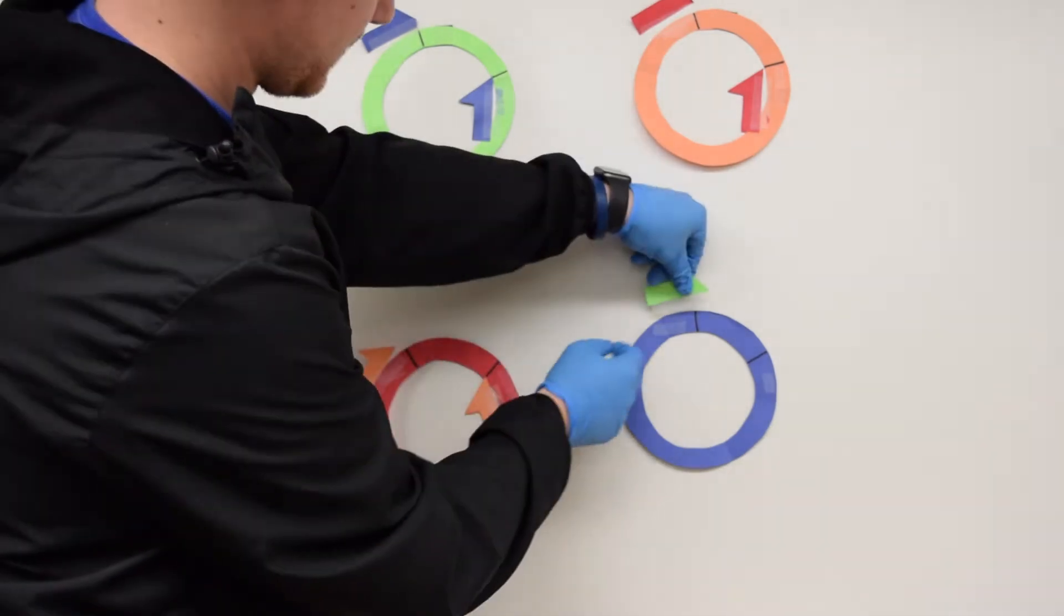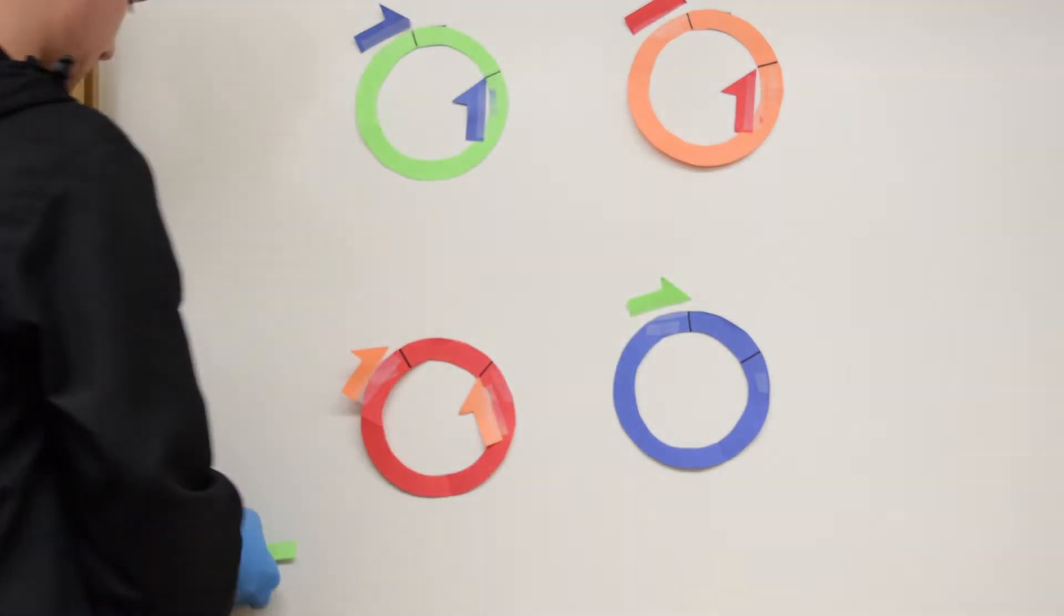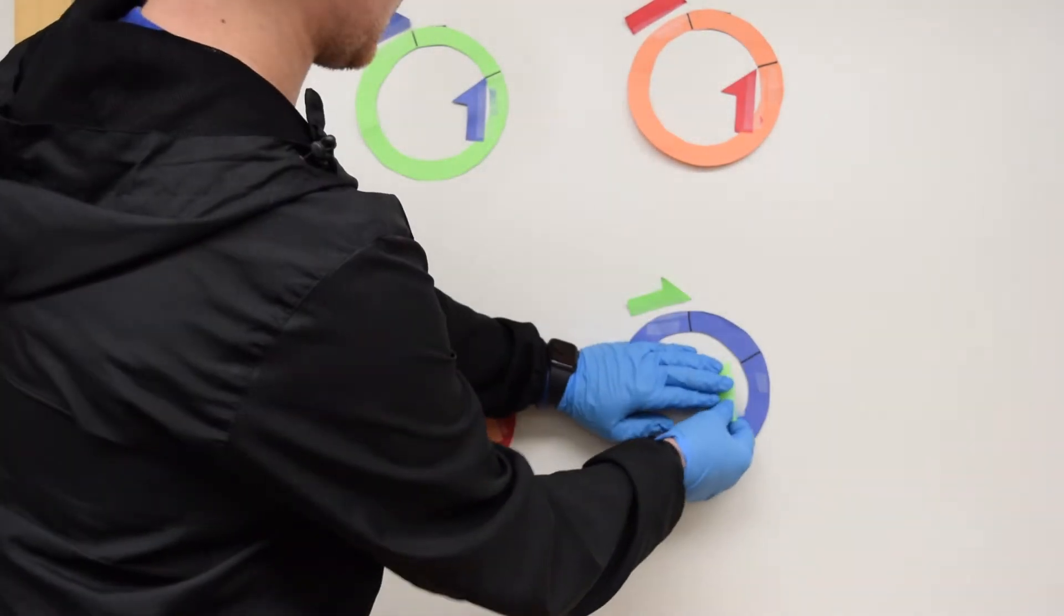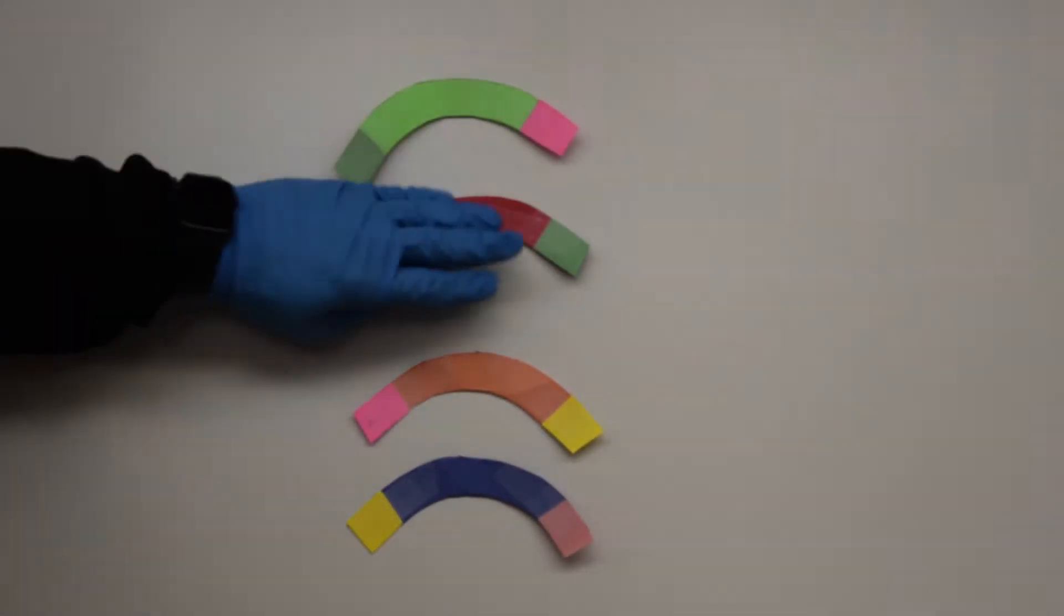This product must include elements necessary for its replication and selection in yeast, including an origin of replication and an auxotrophic selectable marker. Once the amplicons are produced, the products must be digested with restriction enzyme DPN1.